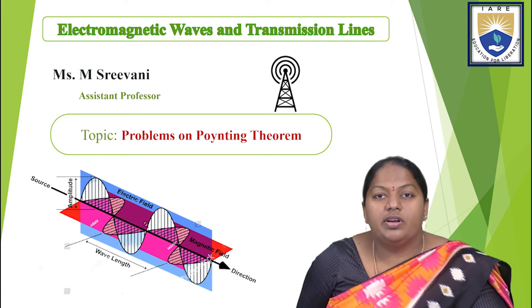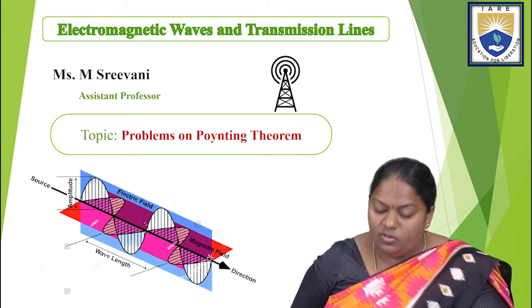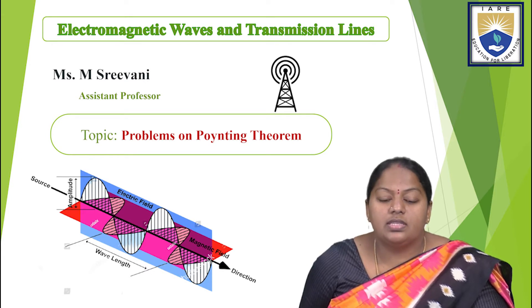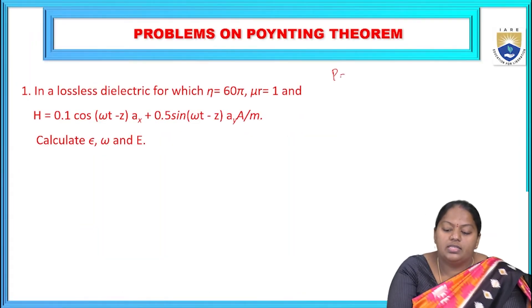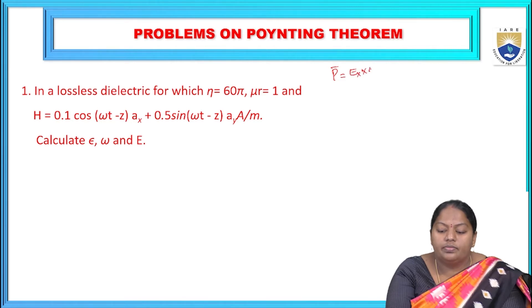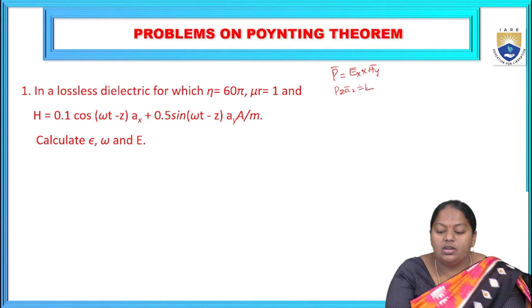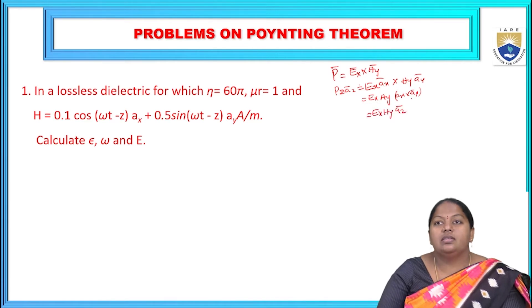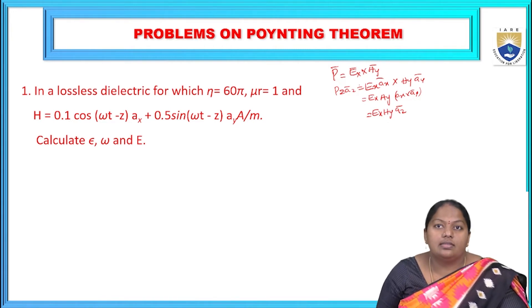To solve problems related to the Poynting theorem, we need to know the values of electric field intensity and magnetic field intensity, then find the average powers. The Poynting vector is given by P̄ = Ē × H̄, which can be written as Pz·az = Ex·ax × Hy·ay. Since Ex and Hy are magnitudes and the cross product of two adjacent vectors gives the third, we get Pz·az = Ex·Hy·az. This is a fundamental equation for solving Poynting theorem problems.